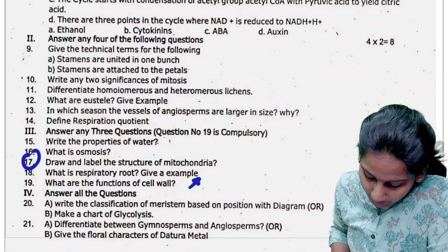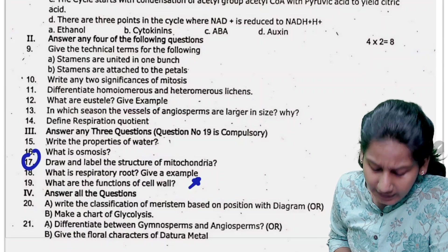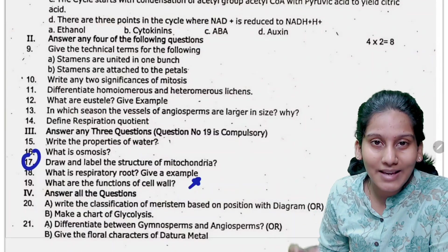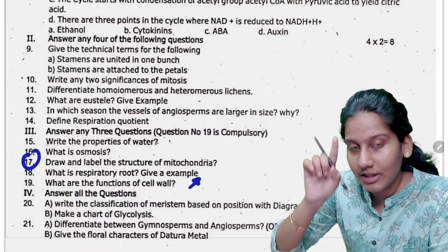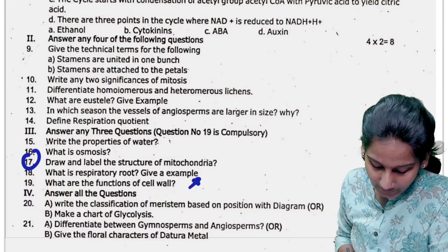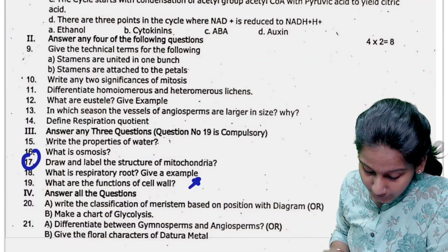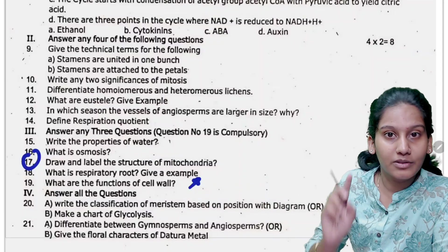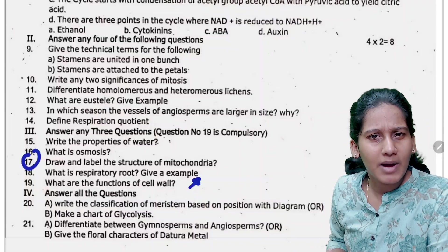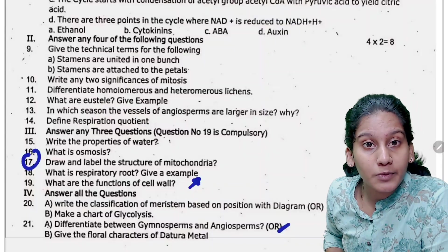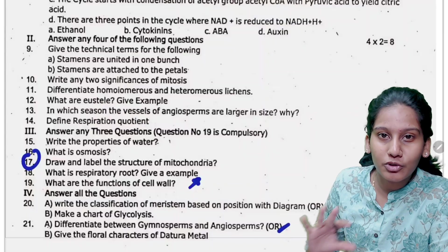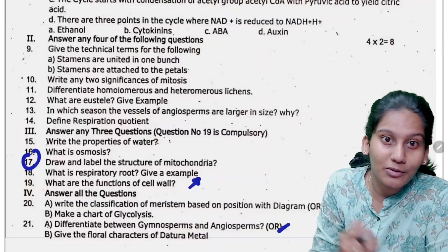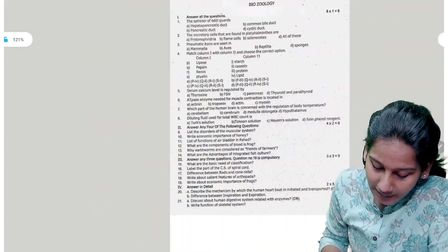If you are used here, if you are looking for the vessels of angiosperms and large size, that is the reason. Respiratory quotient and then the properties of water, osmosis and mitochondria structure - that is the diagram based question. And then the respiratory route and then the functions of cells. We are looking for the compass. 5 marks and meristem model classification. Glycolysis - so if you are looking for cycles. Angiosperms and gymnosperms, there are differences. And there are floral characters. There are also dicot details. You can save time. You can see a little paper. Overall, what about the botany part? If you are looking for 11th standard students, comment down below.